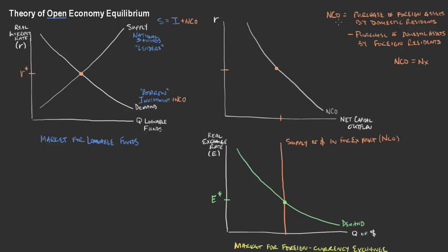Net capital outflow is the purchase of foreign assets by domestic residents minus the purchase of domestic assets by foreign residents. I had previously said that this net capital outflow is equal to net exports — that the actual goods and services traded must be balanced out by the cash and assets that are used to purchase those goods and services.